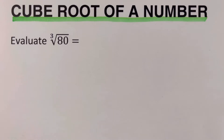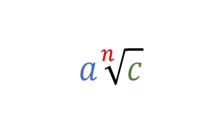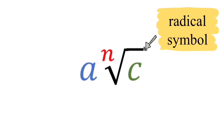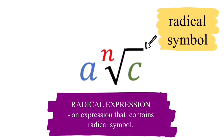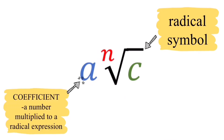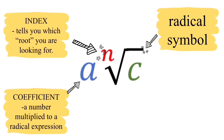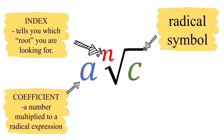Now let's have a review on the parts and definition of radical expressions. Please remember that these are the parts of every radical expression. The first part is the radical symbol. The reason why this is called a radical expression is because it is an expression that contains the radical symbol. Our A here is called the coefficient. The coefficient is a number multiplied to the radical expression. And the letter N here is called the index. This tells you which root you're looking for.